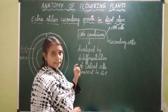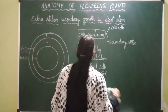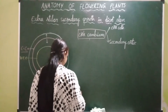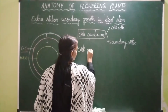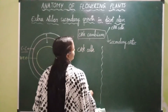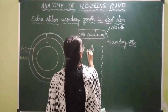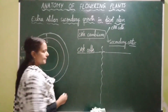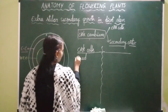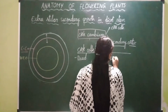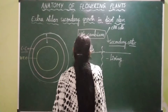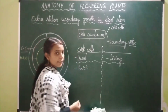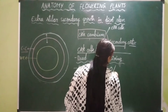Let's study the differentiation between cork cells and secondary cortex. Cork cells are dead cells — they become dead at maturity — whereas the cells present in secondary cortex are living cells. Cork cells are brick-shaped, whereas the cells of secondary cortex are oval or spherical in shape.